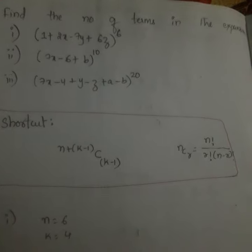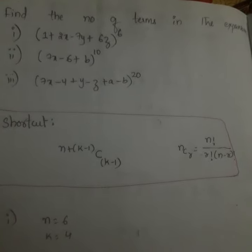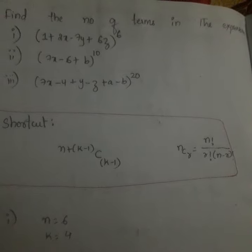In order to solve this problem, there is one shortcut present in binomial theorem. The shortcut is n + k - 1 C k - 1.